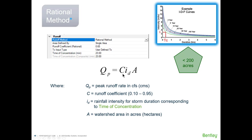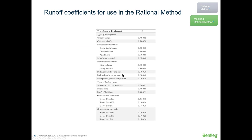C values come from reference books or online resources. Depending on the surface — whether it's urban or grassy — you'll have different C values. This C coefficient is the same for both the rational method and the modified rational method.